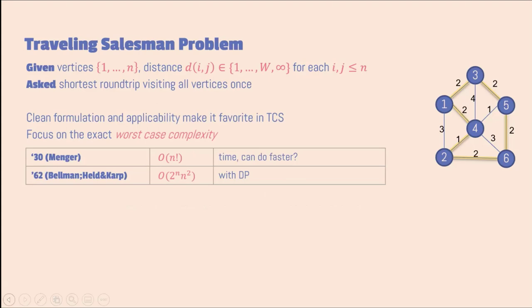Already there was the very easy observation that you can just go over all permutations and get an n-factorial algorithm — or maybe n-factorial plus one, something like that.